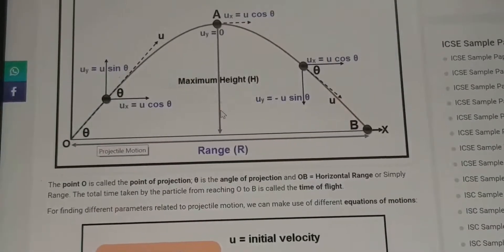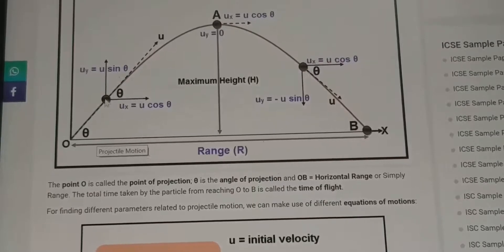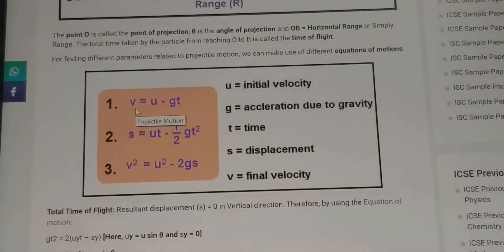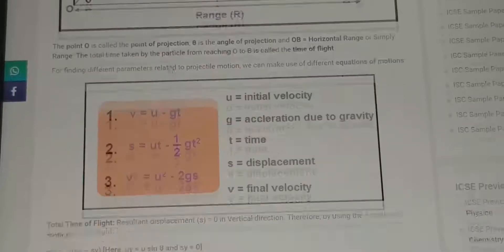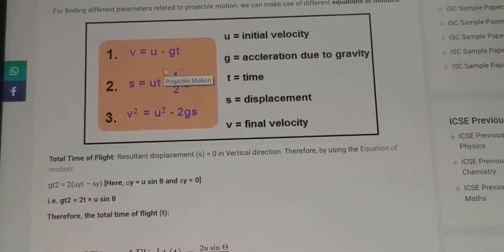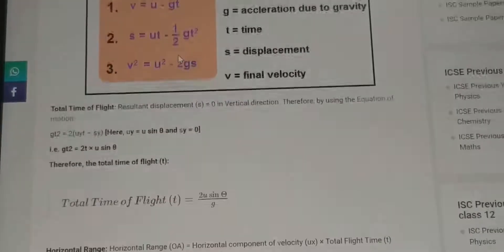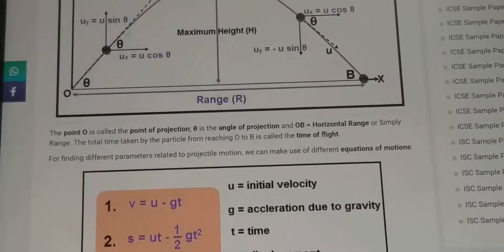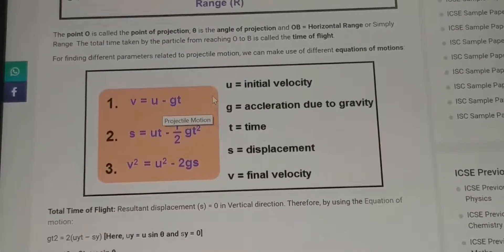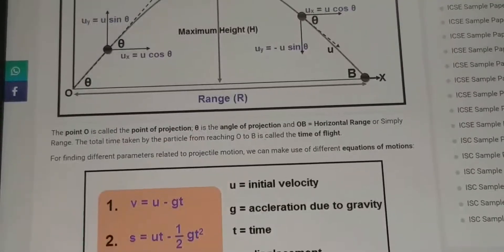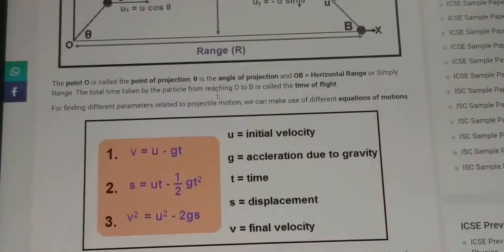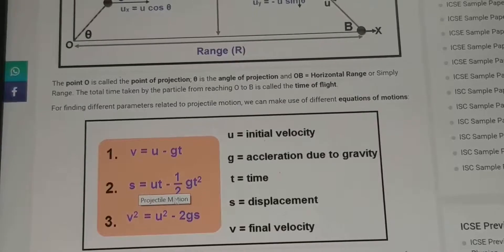To calculate time of flight, consider the vertical motion only for half the trajectory. Using v = u − gt, the initial vertical velocity is u sinθ and the final vertical velocity at maximum height is zero. So u sinθ = g·t, giving t = u sinθ/g for half the path. For the complete path, the total time of flight is T = 2u sinθ/g.